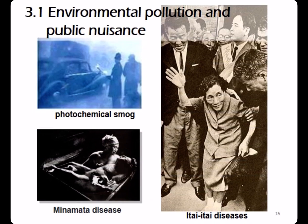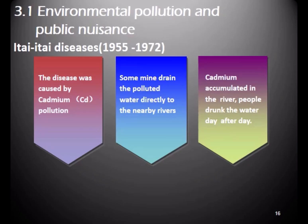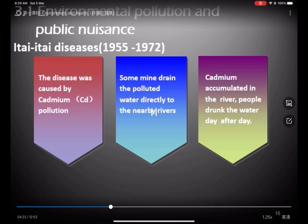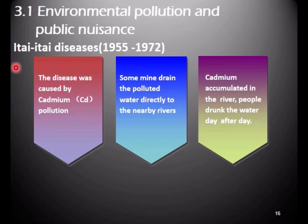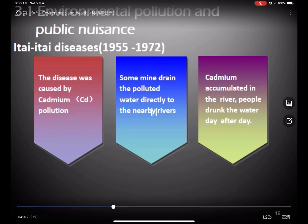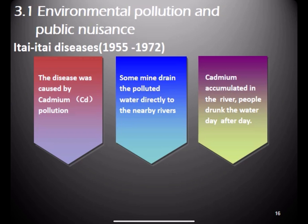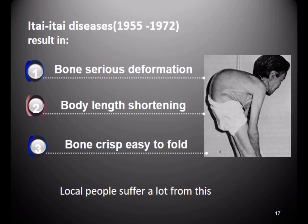Examples of environmental pollution include photochemical smog in London, England, and Minamata disease and Itai-Itai disease in Japan. Itai-Itai disease is caused by cadmium pollution — 'itai' means pain in Japanese. A quarry pumped polluted water directly into nearby rivers, cadmium accumulated in the river, and people drank the water day by day. These people developed serious bone deformation — their bones were severely deformed, their body length was shortened, and the bone became very brittle.